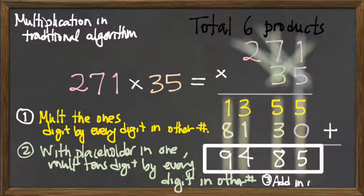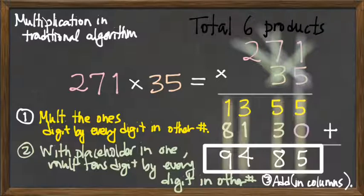And so our last step was add. Add in columns. In other words, add normally, but I just wanted to emphasize there. So that's the traditional multiplication algorithm.